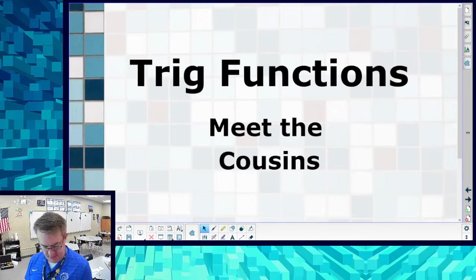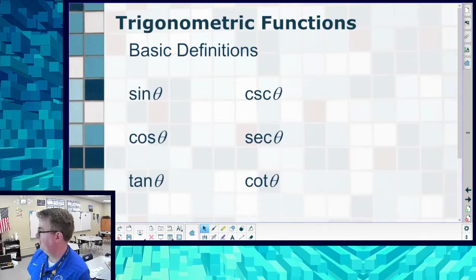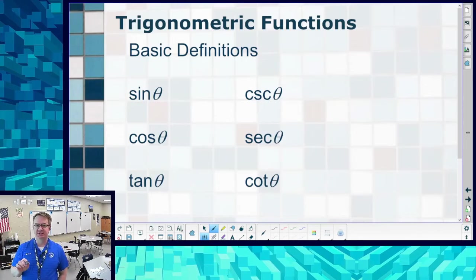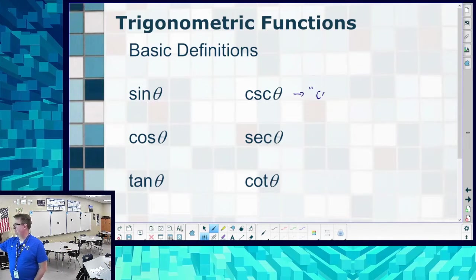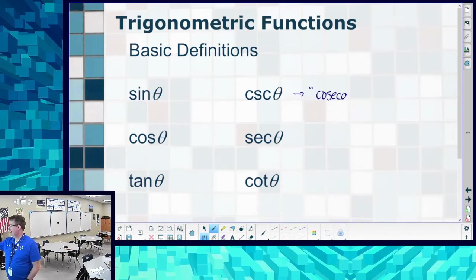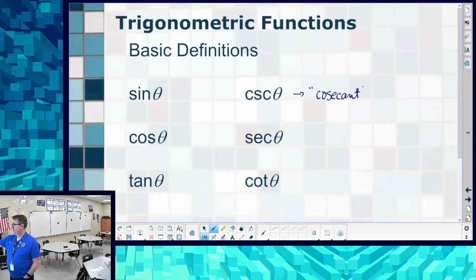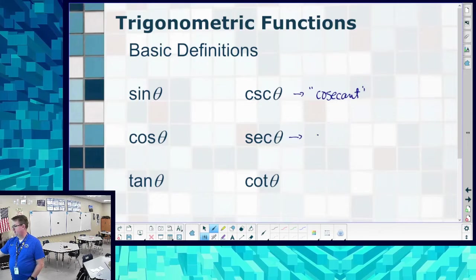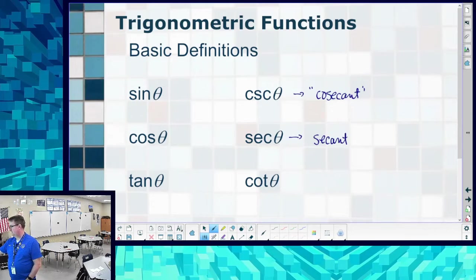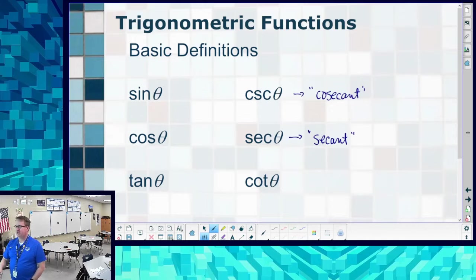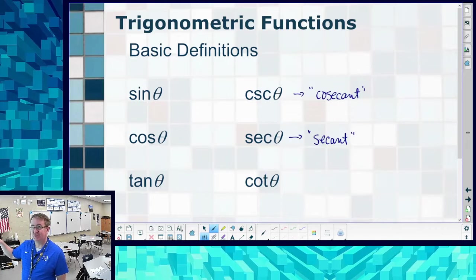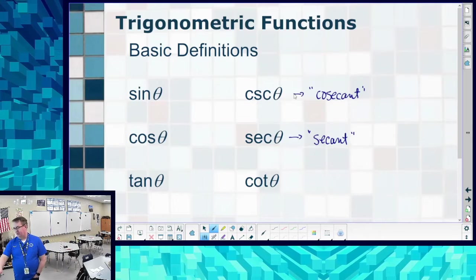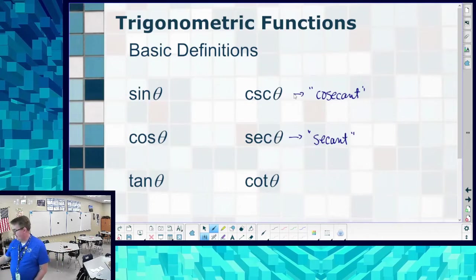We're going to come back here. If you remember before, we have sine, cosine, tangent. And like I said, we've got some cousins here. This is pronounced cosecant, technically cosecant theta because that's the Greek letter we're using. This is called secant. Now notice we had sine and cosine, so cosecant and secant kind of have that same wording. And while we have tangent, we are also going to have cotangent.